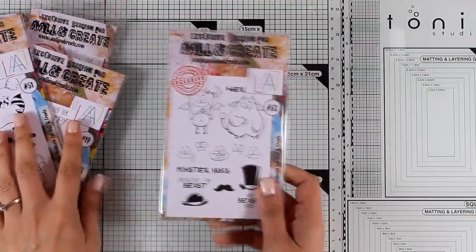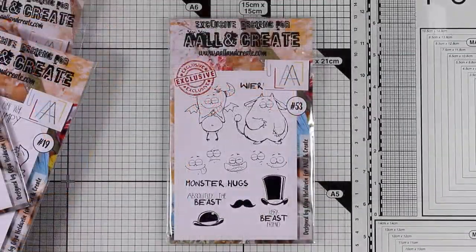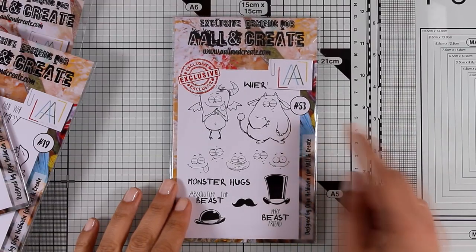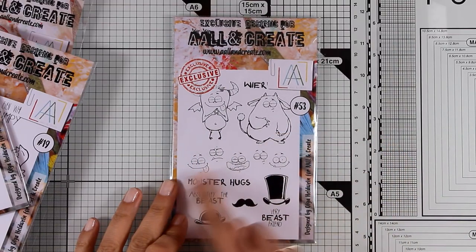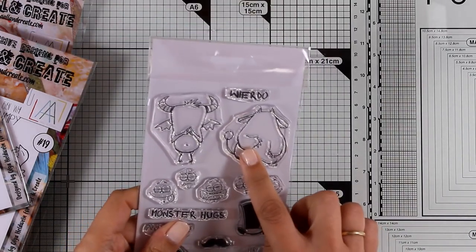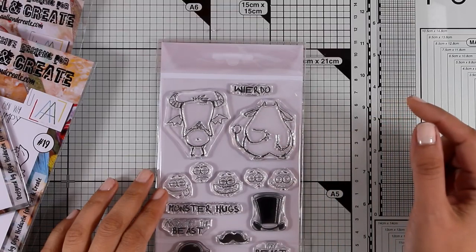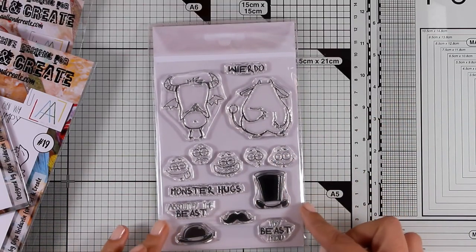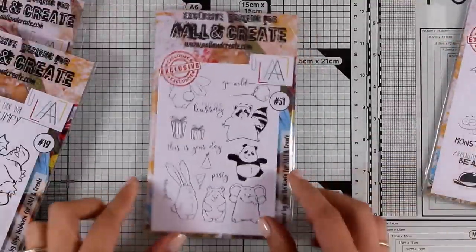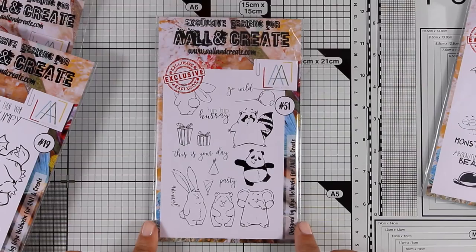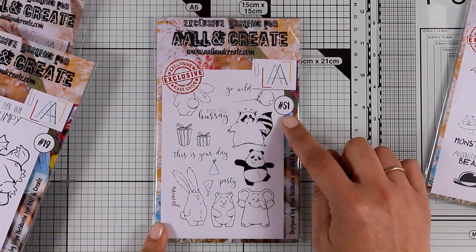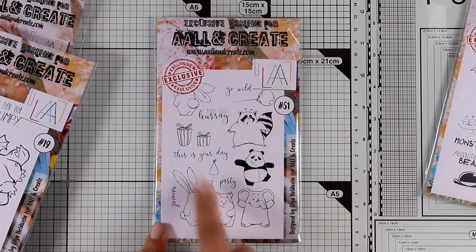You today to a new European company. This is called All and Create and their products are also available through Simon Says Stamp. So let's start with number 53. This is a stamp set with these two adorable monsters and they even have hearts and mustaches that you can use. What I love about these stamps is that they don't have a face and they give you different options that you can stamp to give your monsters their own character. Let's move on to the next stamp set. This is number 51. These are All and Create stamp sets, actually don't have a name, they have numbers for now. So this is full of adorable creatures such as a bunny, a bear, an elephant, a panda and many more, and they also give you different options to create your